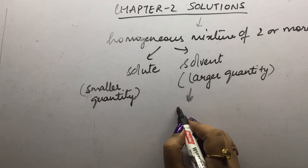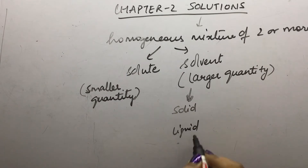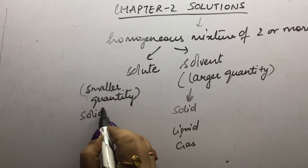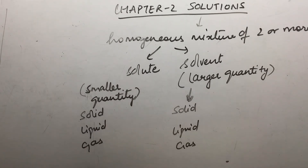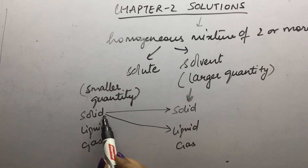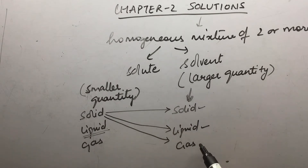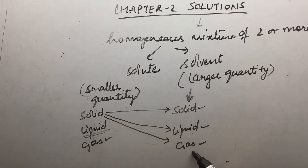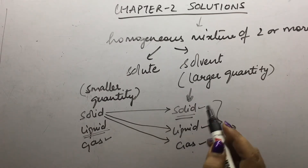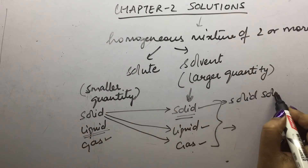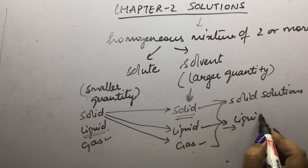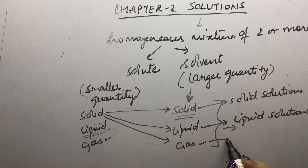The solvent can be either solid, liquid, or gas. Similarly, the solute can also be solid, liquid, or gas. A solid solute can be present in a solid, liquid, or gaseous solvent. Similarly, a liquid solute can be present in solid, liquid, or gaseous solvent, and a gaseous solute can also be present in solid, liquid, or gaseous solvents. Depending on whether the solvent is solid, liquid, or gas, we classify the solution. If the solvent is solid, we call it solid solutions; if liquid, liquid solutions; and if gas, gaseous solutions.